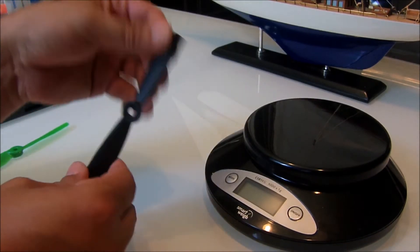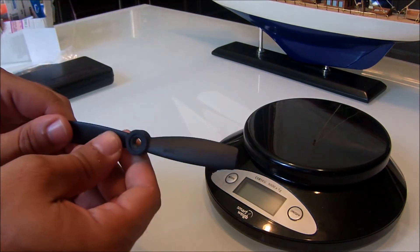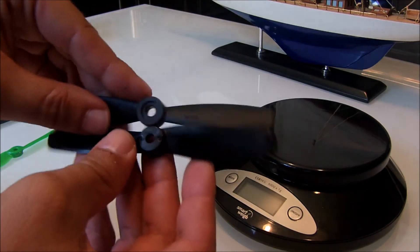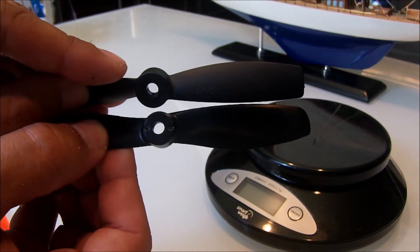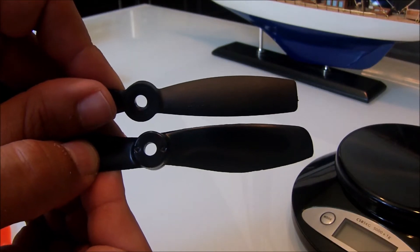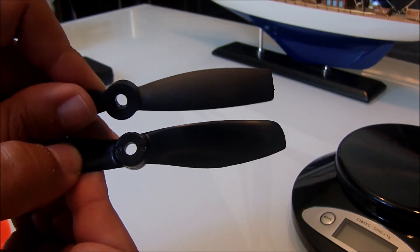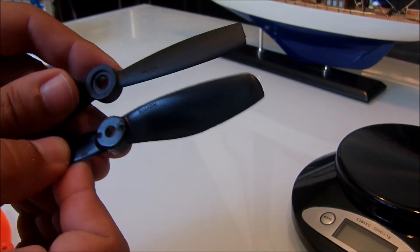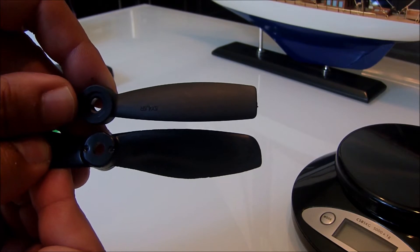Okay, so this is the HQ 50-45 bullnose. Let me show you a side-by-side comparison. You have a little bit different shape of the blade, a little bit more blade surface area on the new Gemfans. As you can see, they call them bullnose, but they are slightly rounded at the ends.